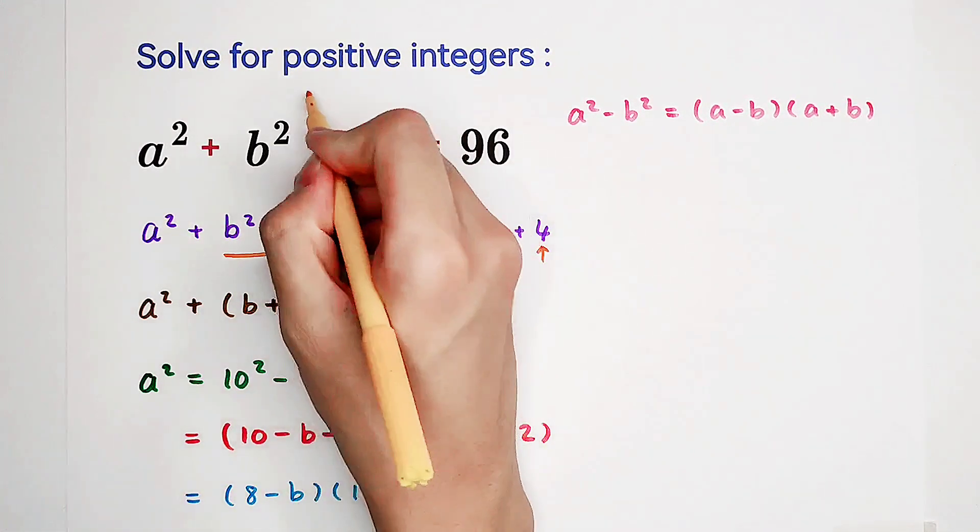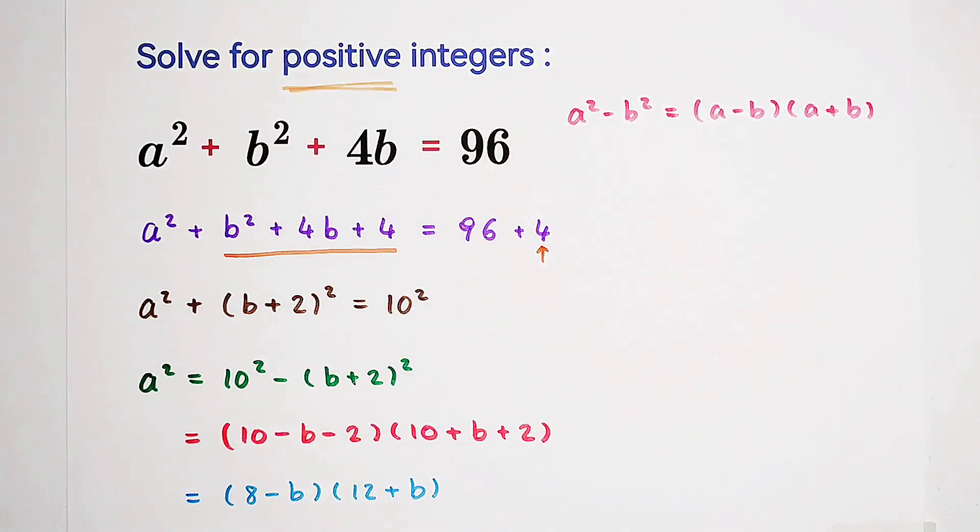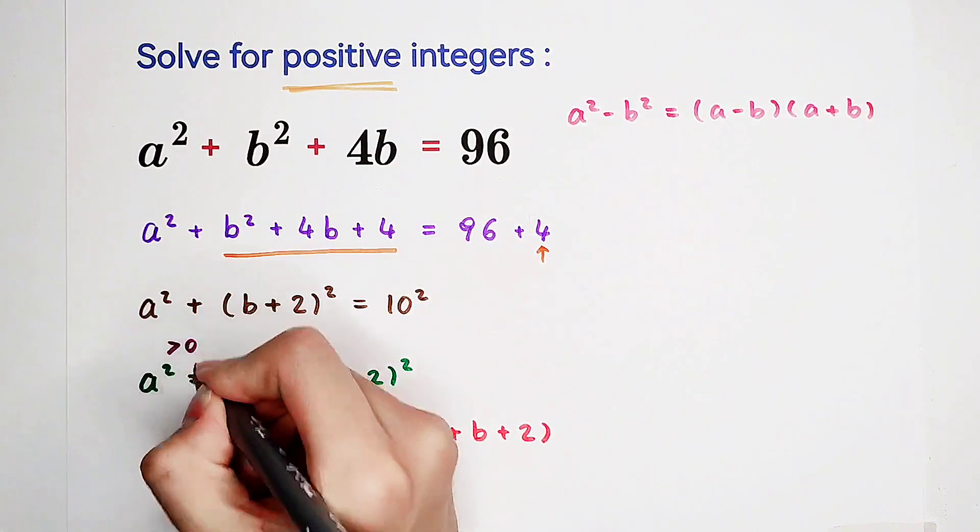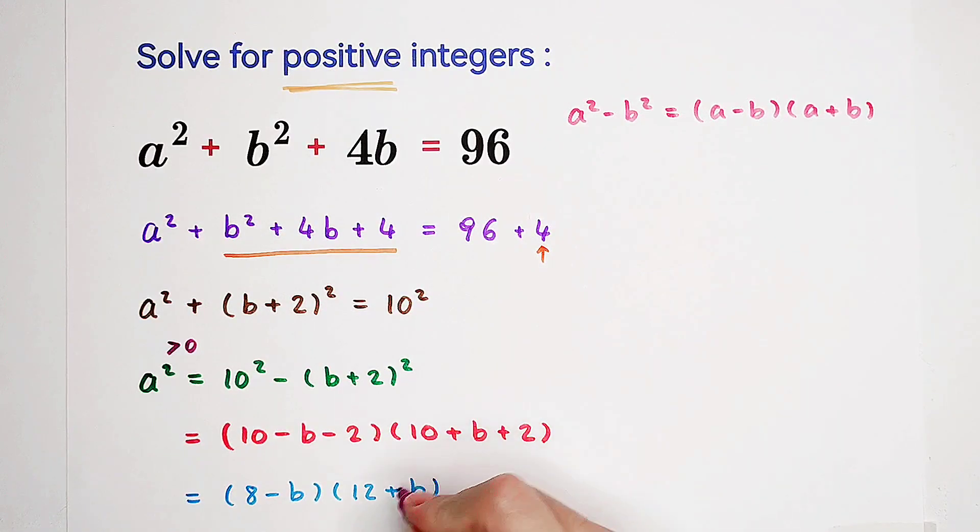Because a and b are positive, they're positive integers. So that means a squared is positive. Of course, 12 plus b is also positive. A positive number is equal to this guy times a positive number. So that means that this one, 8 minus b should also be positive. It is positive as well.